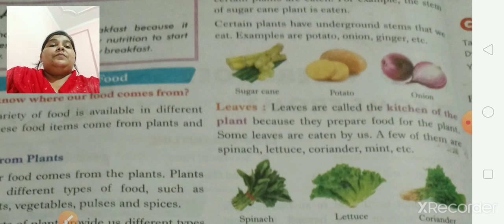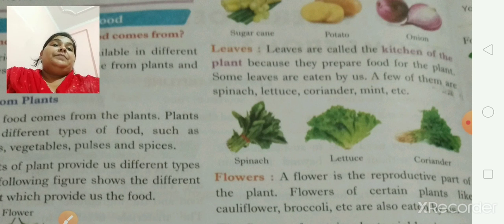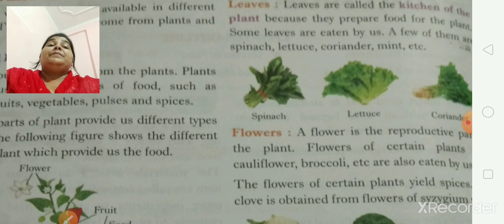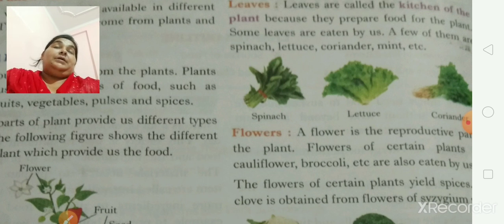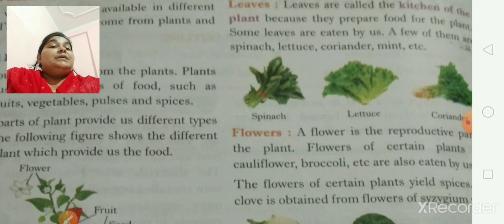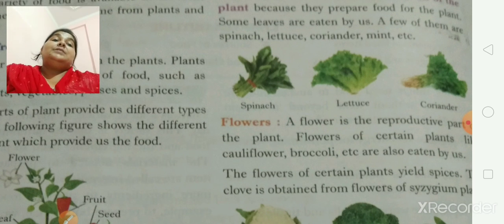The next examples of food from plants are leaves. The best example given is spinach — palak — which is good for our eyesight. Some other examples are also there: lettuce, coriander, mint, etc.